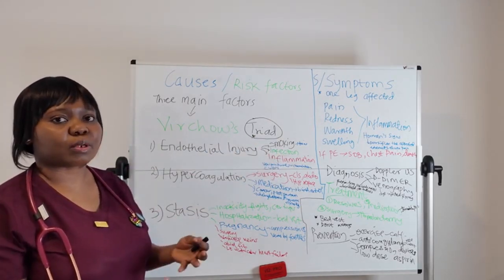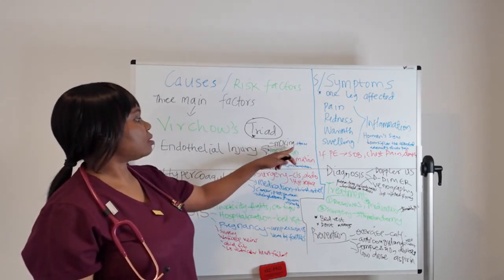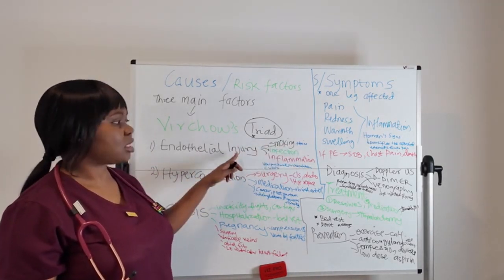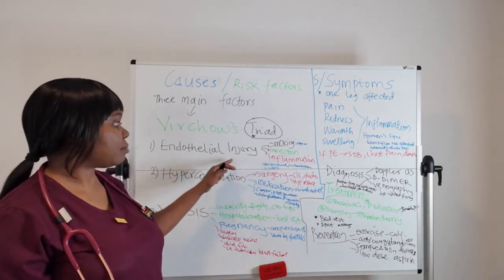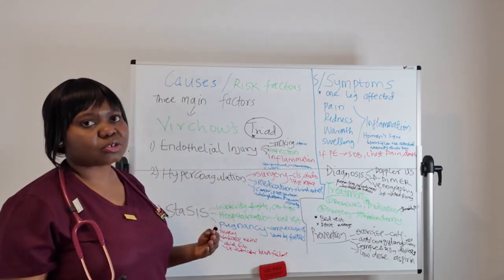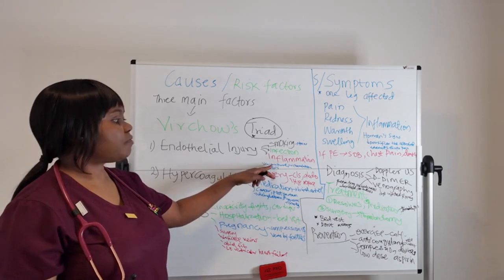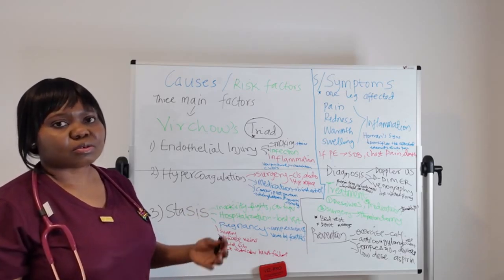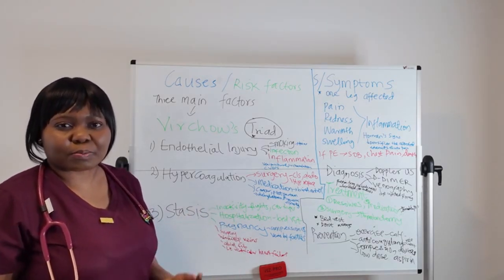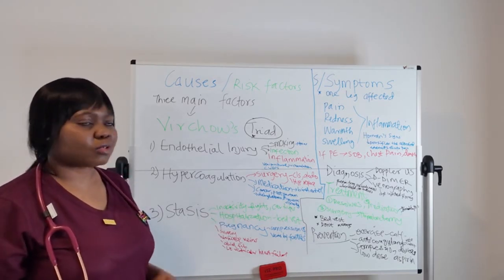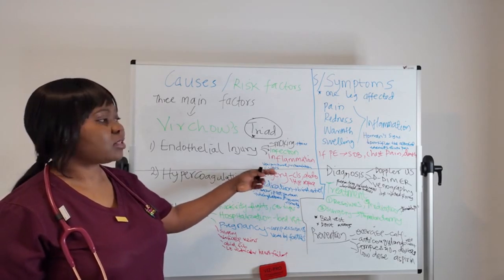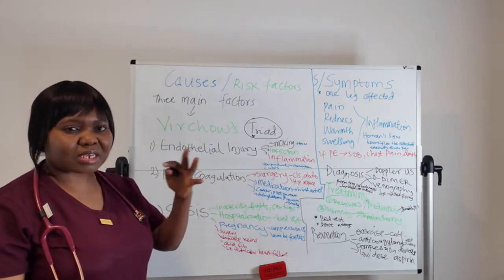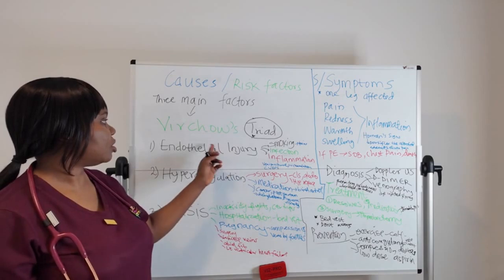Causes of endothelial injury include smoking — toxins from tobacco damage the endothelium — infection, and inflammatory conditions. IV cannulation, where you are puncturing the vein while placing an IV line repeatedly, can cause clot formation. Central venous devices, such as central catheters, can also injure the endothelium during the insertion procedure.